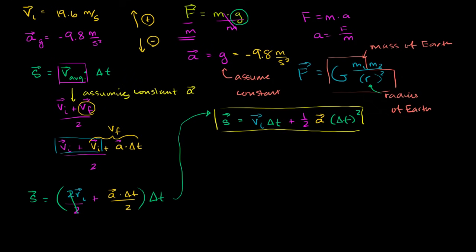What I want to do in this video, now that we have displacement as a function of time given constant acceleration and initial velocity, is plot displacement, final velocity, and acceleration all as functions of time, so that we really understand what's happening as the ball is going up and then down.